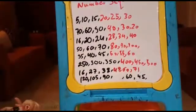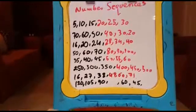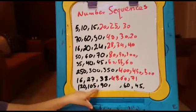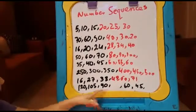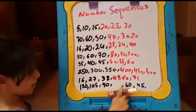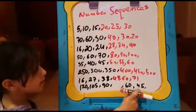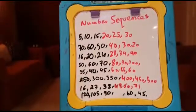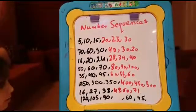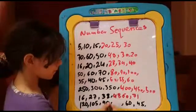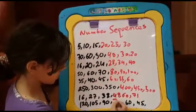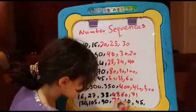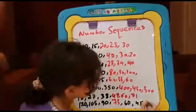Now here we have 120, 105, 90, 60, and 45. The rule is subtracting 15. The numbers are 75 and 30.